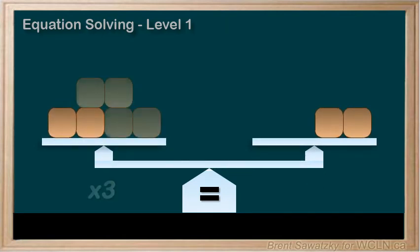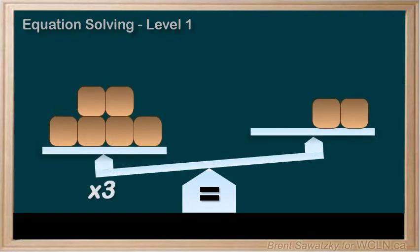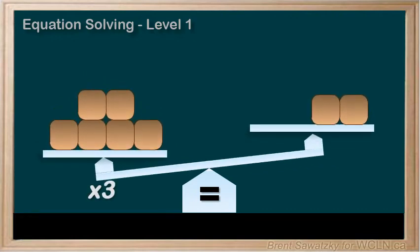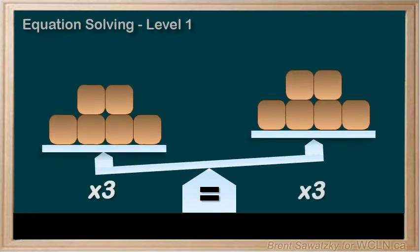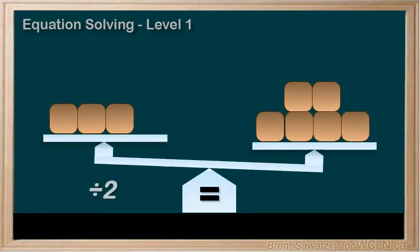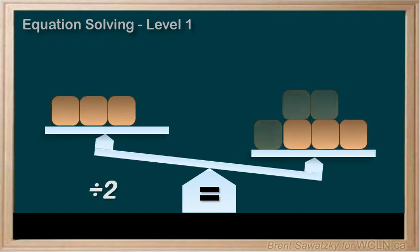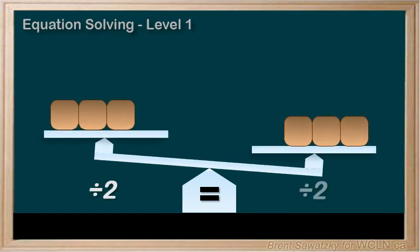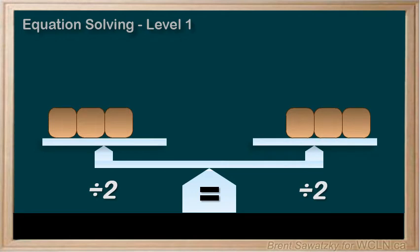If I triple the left side, that is times by three, I'd have to do the same thing to the right, and that would keep it balanced. If I half the left side, that is divided by two, I'd have to do the same thing to the right. And again, it would be balanced or equal.